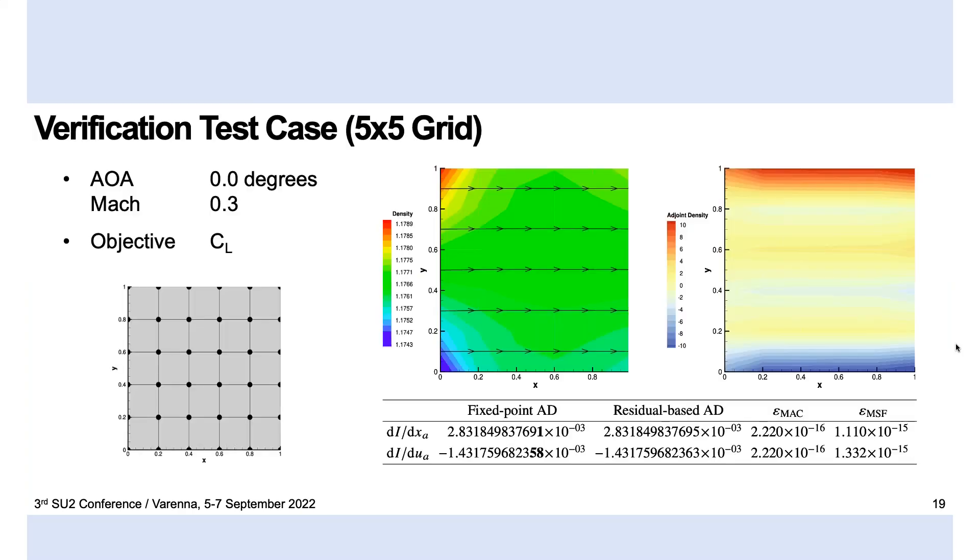Returning to the new formulation of the coupled discrete adjoint problem, we ran some validation tests, starting with this very thin case where we had just a 5x5 grid, which we were initially running to make sure that our partial derivatives and also our total derivatives were correct.